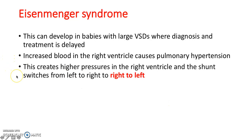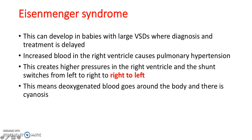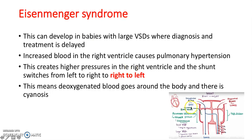When pulmonary hypertension develops, the pressure changes from being lower in the right ventricle and higher in the left ventricle, to being higher in the right ventricle. So the blood goes back into the left ventricle, the blood mixes, and deoxygenated blood goes into the oxygenated side — into the left ventricle, through the aorta, and around the rest of the body, leading to cyanosis.